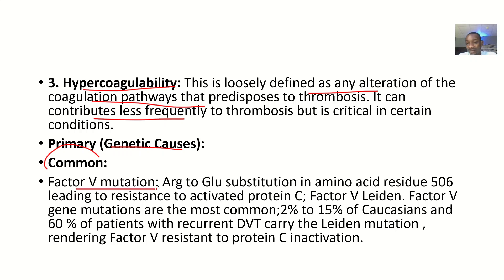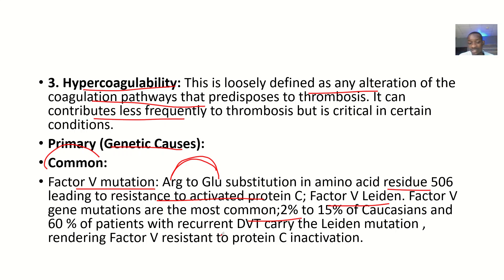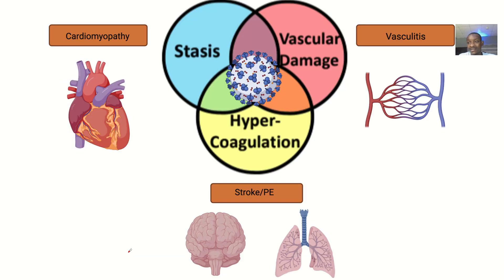One genetic cause is a mutation in Factor V — specifically, glutamine substituting arginine at the amino acid residue position 506, leading to resistance to activated protein C. This is Factor V Leiden. Factor V gene mutations are the most common mutations, occurring in about 2–5% of Caucasians, and 60% of patients with recurrent deep vein thrombosis carry the Leiden mutation, rendering Factor V resistant to protein C inactivation. So now coagulation just occurs unchecked.